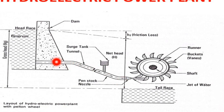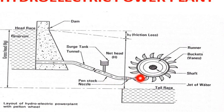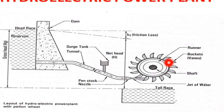In the dam, we supply water to the turbine through a large diameter pipe called a penstock. At the end of the penstock, the nozzle is fixed. In the turbine, the outer edge has buckets and vanes. The circular rotating part is the runner. The runner is connected to a shaft, generating mechanical energy.